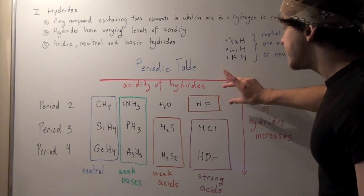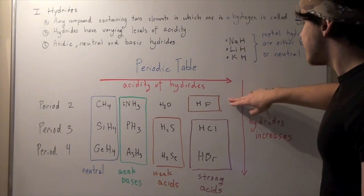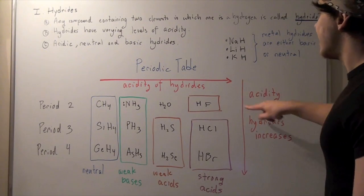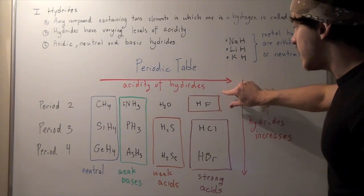Because fluorine is found at the top, HF is a weak acid. Remember, as we go up a group, the acid strength decreases.